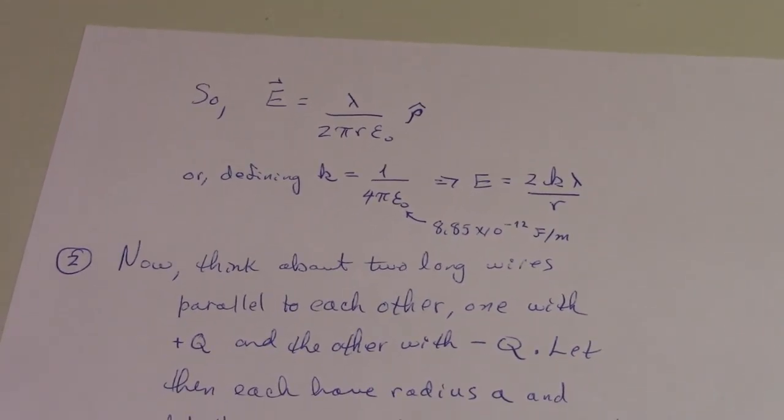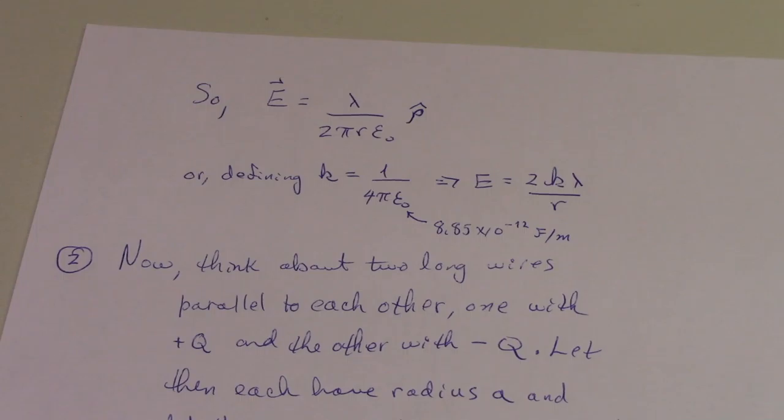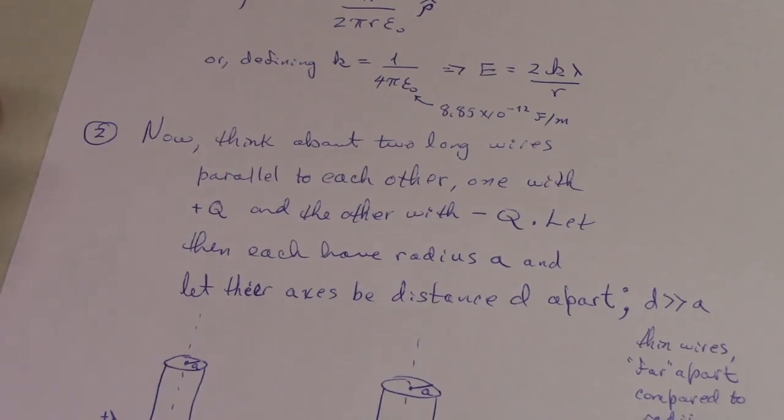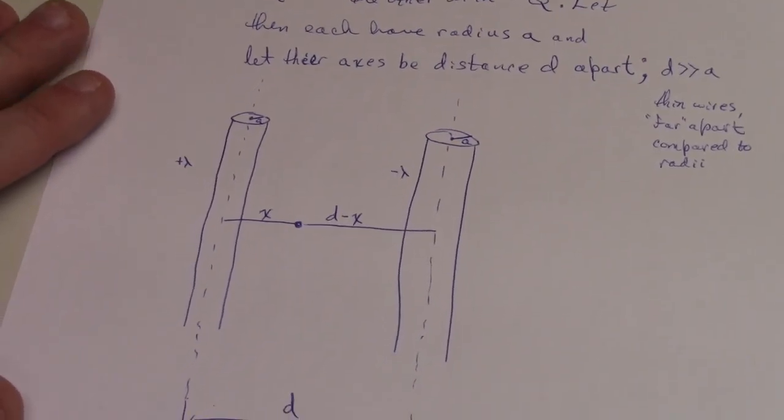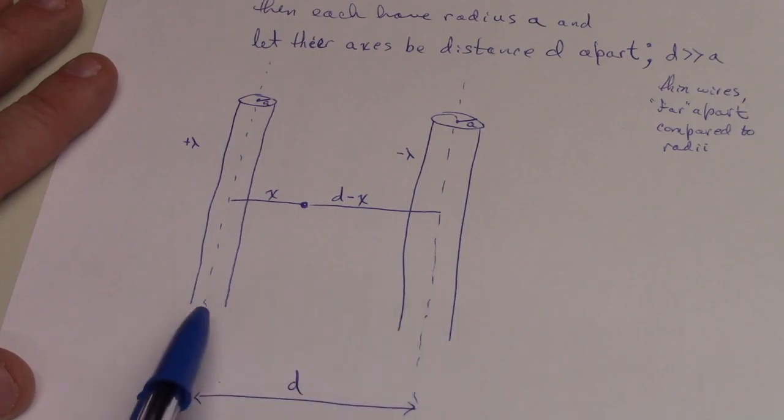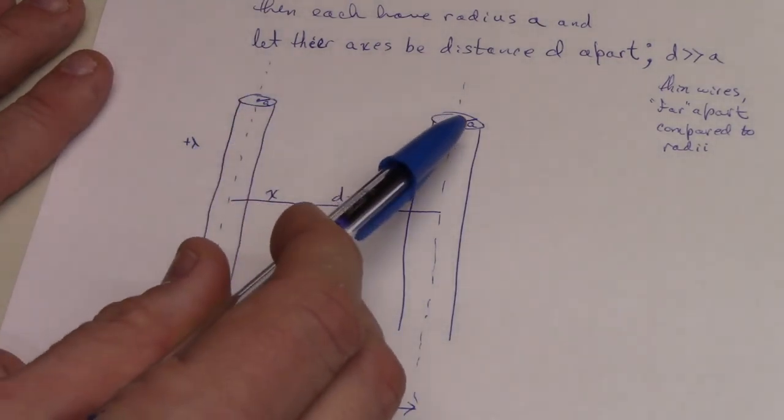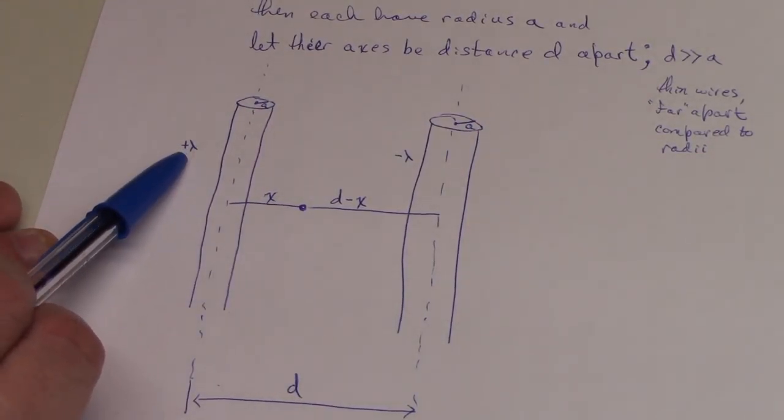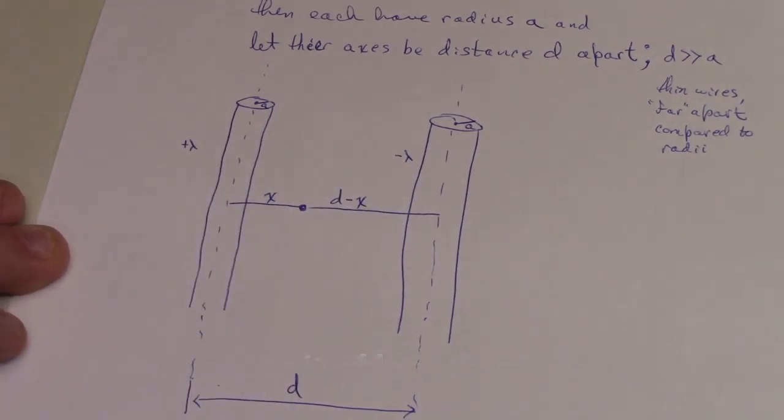For step two, let's think about two long wires parallel to each other, one with positive charge and one with negative charge. Let each one have a radius of A, so they're equal radii wires, and suppose their axes are a distance d apart. These wires are d apart, or the middle parts of the wires are d apart. They each have radius A.